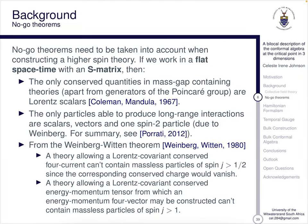On the higher spin side, in order to build up a higher spin theory, there are certain no-go theorems. If we work in flat spacetime with an S matrix, the only conserved quantities in the mass gap containing theory apart from the generators of the Poincaré group are Lorentz scalars. So if we try to link internal symmetries with spacetime symmetries, we'd only get trivial interactions. Secondly, the only particles able to produce long-range interactions are scalars, vectors, and one spin-two particle. This is the Weinberg no-go theorem.